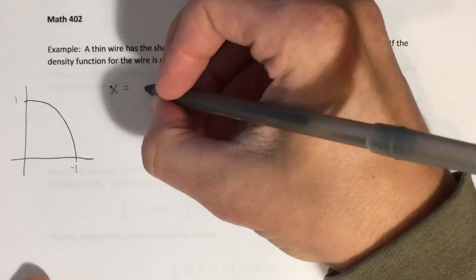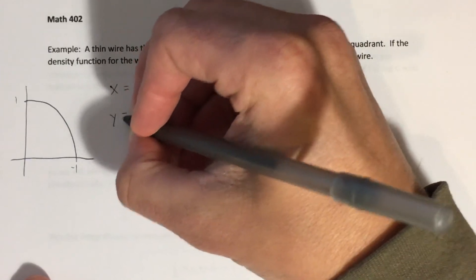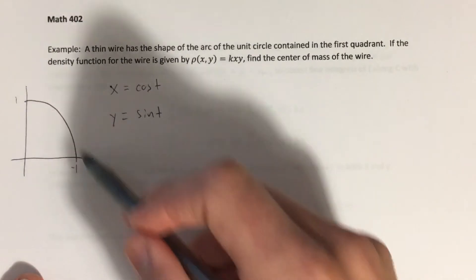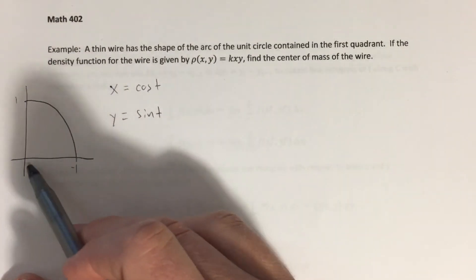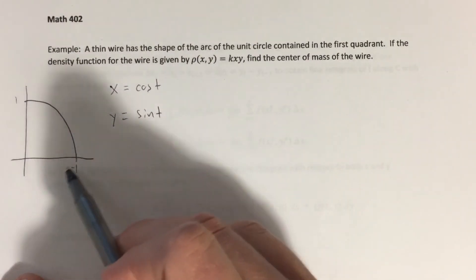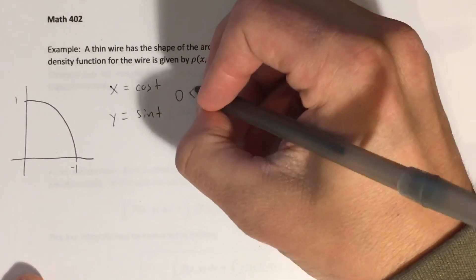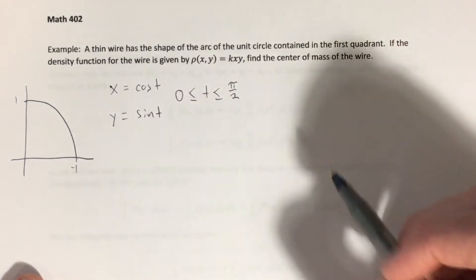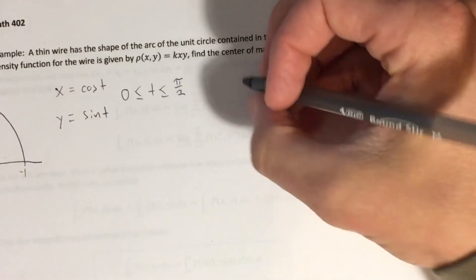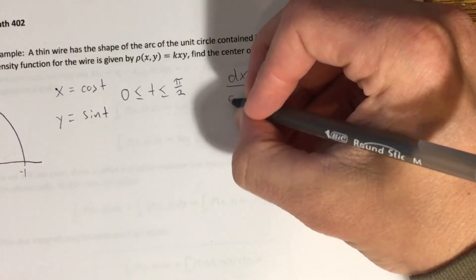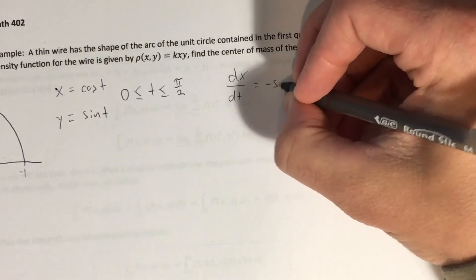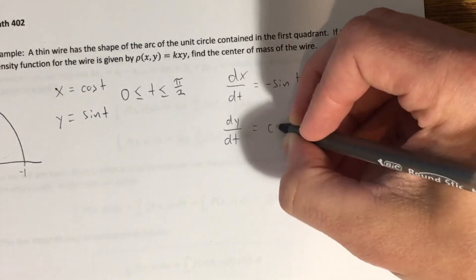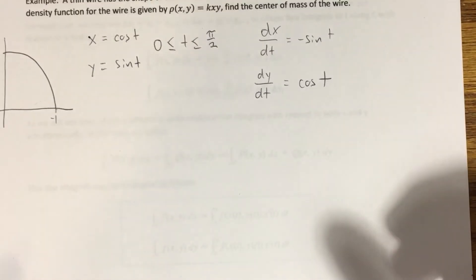The natural parametrization that we usually use for a circle, the unit circle in particular, is x equals cosine of t, y equals sine of t. Although in this case, because we only want this portion of the unit circle, t represents the radian measure here, and it's going to go from 0 to pi over 2. So I can say this. Now I also know that I'm going to need dx dt and dy dt. Let's evaluate those. dx dt is equal to negative sine of t, and then dy dt would be cosine of t. All right.